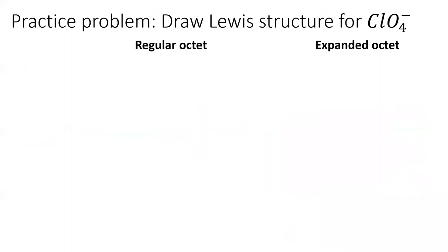Let's practice by drawing the Lewis structure for the perchlorate ion. First, try drawing it with a regular octet, then see if you can't make a happier structure with an expanded octet.